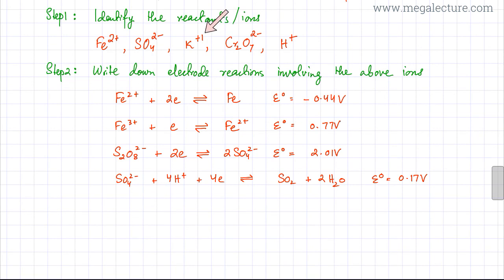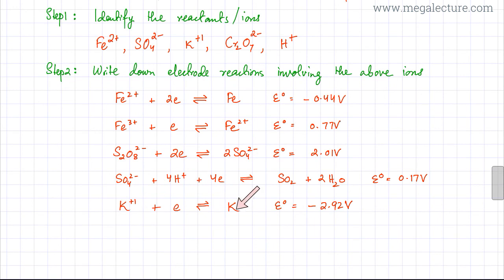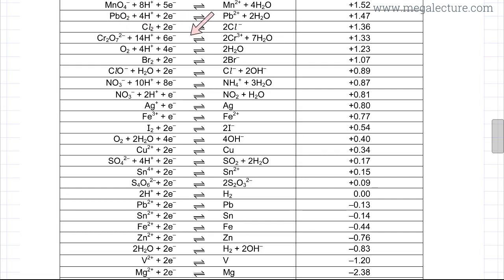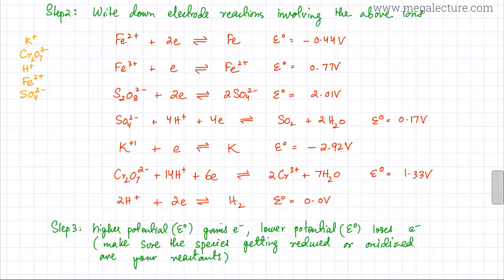Moving to K+1, the electrode reaction is K+1 in equilibrium with potassium: K+1 gaining electrons to form K and vice versa, with an electrode potential of -2.92 volts. Then for Cr2O7 2-, the dichromate ion, there is exactly one electrode reaction where Cr2O7 2- with 14 H+1 ions are in equilibrium with Cr3+, getting reduced to Cr3+ and vice versa.